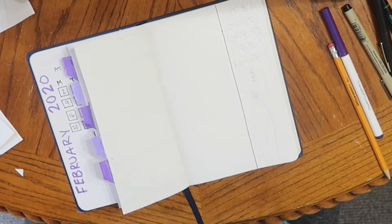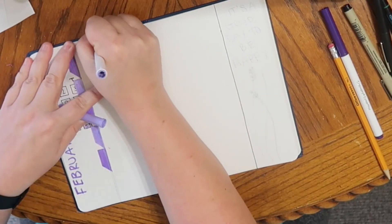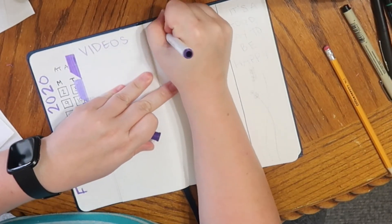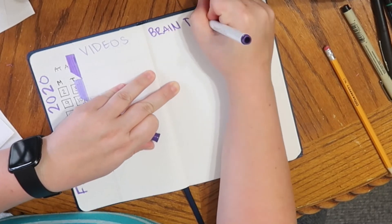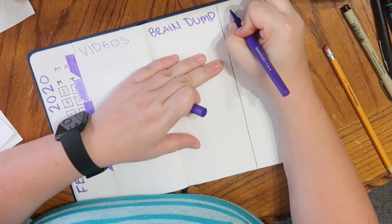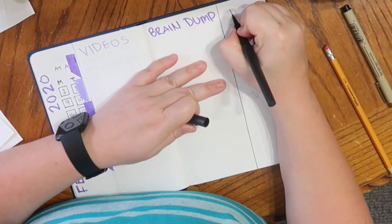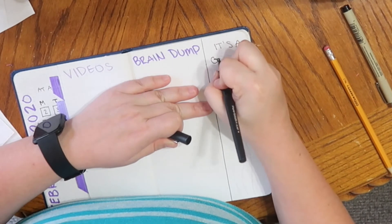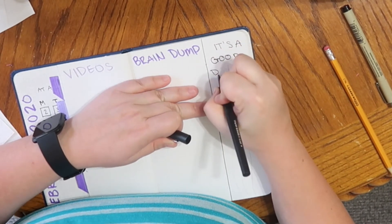All right, and moving on to the last page, there's two little sections left and on the left side, I used it to have a running list of video ideas I have. And then on the right side, I have a brain dump for just anything I need to throw down. And then on the very outside, I thought it would be nice to have a quote up in the top.